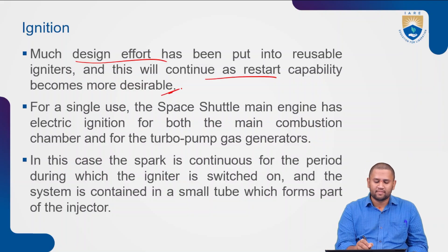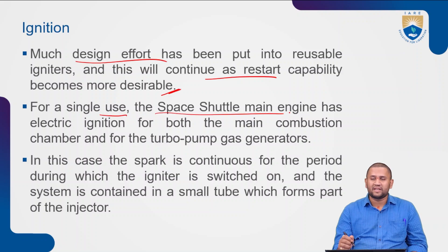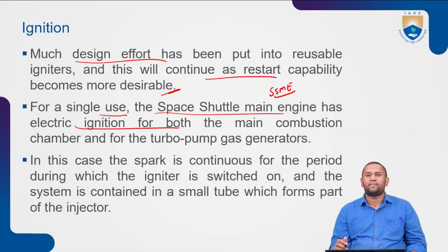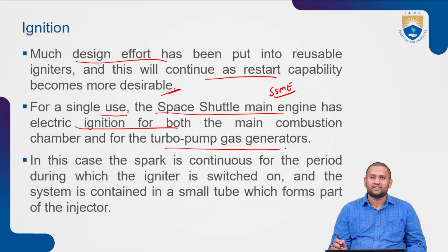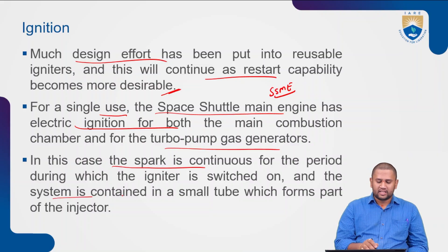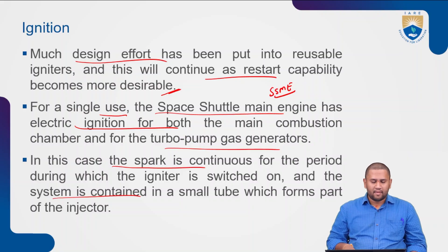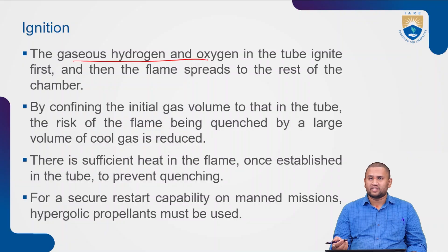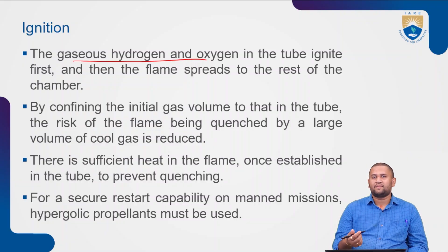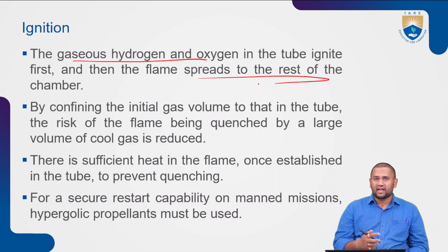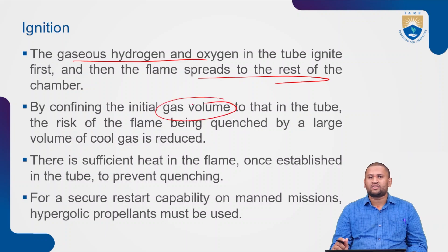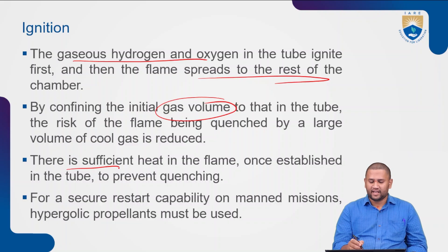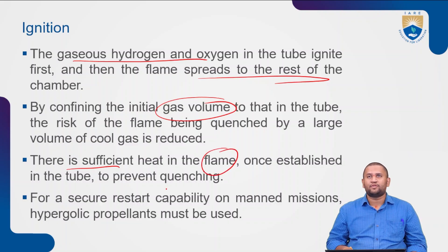As restart capability becomes more desirable, the Space Shuttle Main Engine (SSME) uses electric ignition for both the main combustion chambers and the turbo pump gas generators. The spark is continuous for the period during which the igniter is switched on, and the system is contained in a small tube forming part of the injector. The hydrogen and oxygen gases in the tube ignite first and the flame spreads to the rest of the combustion chamber. By confining the initial gas volume in that tube, the risk of the flame being quenched by a large volume of cool gas is reduced, which is sufficient to establish and sustain the flame.